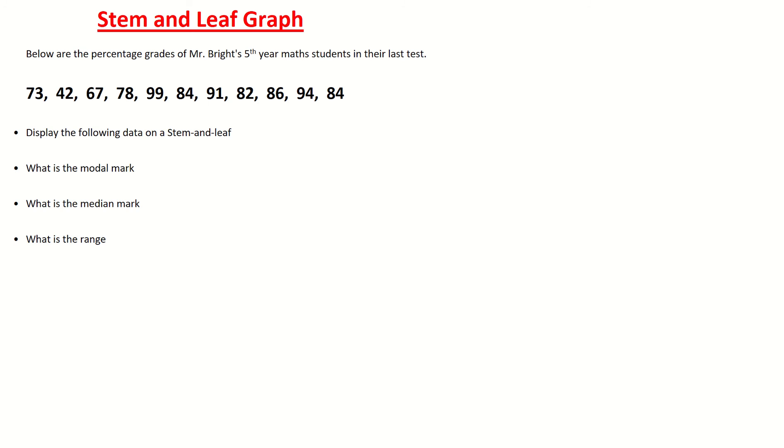Basically what we have to do is graph this data. The data is telling us we have the percentage grades of Mr. Bright's 5th year maths class students in their last test. These are the percentages ranging from 42% up to 94%. First thing we're going to do is draw a vertical line and then followed by a horizontal line. That's going to be our stem and leaf graph.